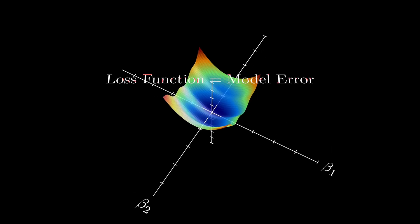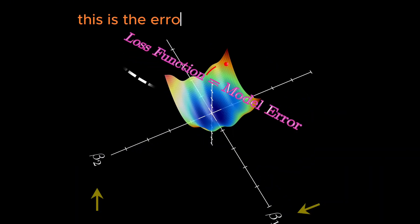In almost every machine learning problem, our ultimate goal is to minimize a function. This function, often called the loss function or cost function, measures how well our model is doing. Let me explain.